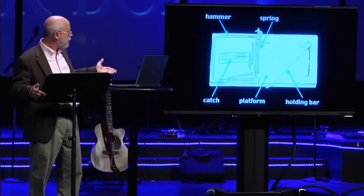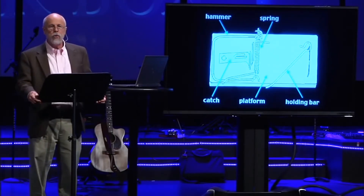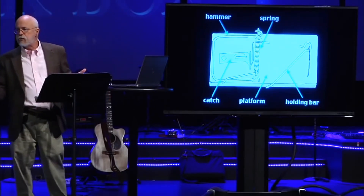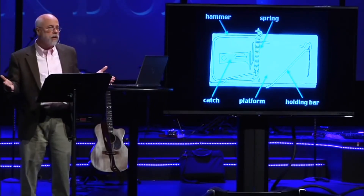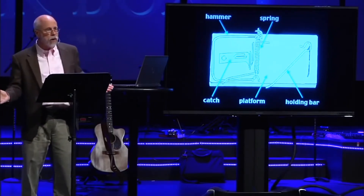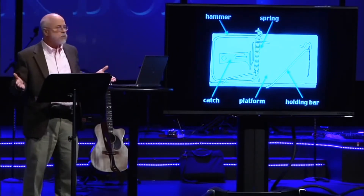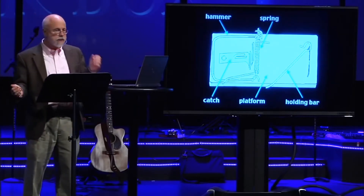The mousetrap needs all these parts to work. If you took away the spring, the catch, the holding bar, or any of the parts, you would not have a mousetrap that worked half as well — you would have a broken mousetrap. It wouldn't work at all. This is what I mean by the phrase 'irreducibly complex.'